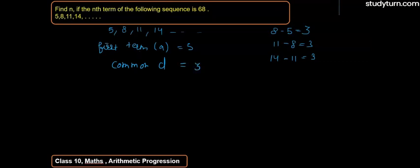So now we can see here the sequence is in AP. So nth term is equal to: an is equal to a plus n minus 1 into d. So here we can find the n value.